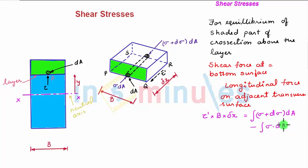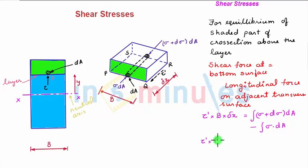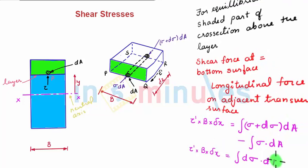One important point to note: since our elemental area is above the neutral axis, it will be subjected to compression under a sagging moment. So the direction of force is shown according to the sign convention for compression. Upon solving, we get tau dash times b times delta x equals the integral of d sigma times dA.